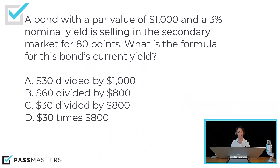So of our choices: $30 divided by $1,000? No. $60 divided by $800? No — the annual interest is only $30. $30 divided by $800? Yes. $30 times $800? No. So $30 divided by $800 would be the correct answer.